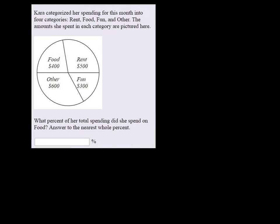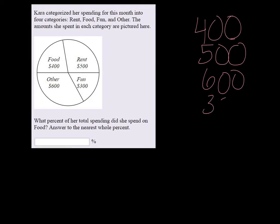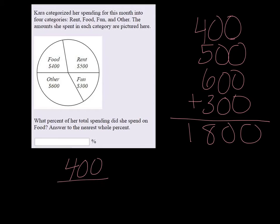So if we add up her total spending, we have 400 plus 500, 600, and 300, so $1,800 all together. And she spent 400 on food, so it's 400 out of 1,800.